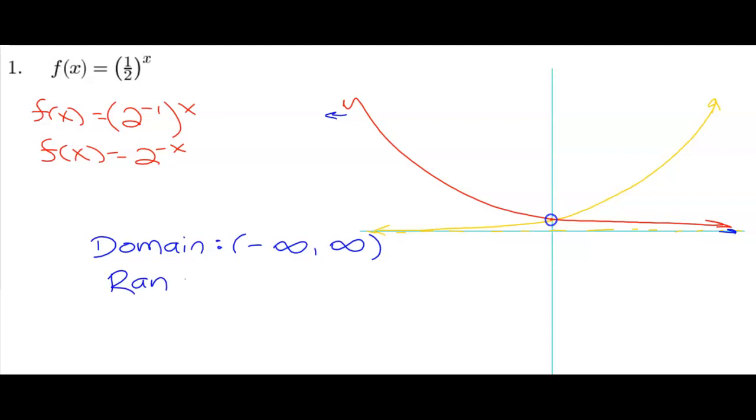And the range. We'll notice it's asymptotic to 0. So there's the minimum value, but it never actually reaches 0. Never equals it, and then it goes up forever towards infinity. So there's the domain and range for problem number 1.